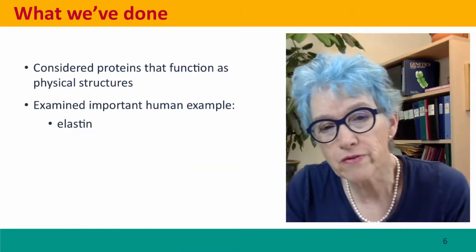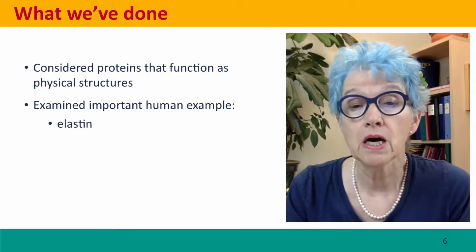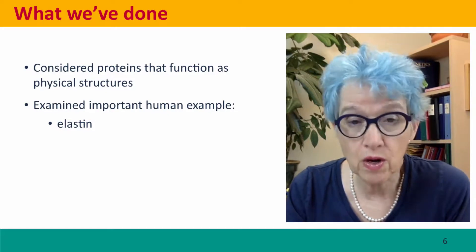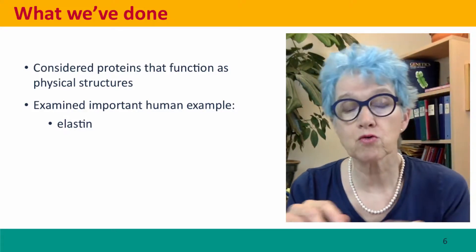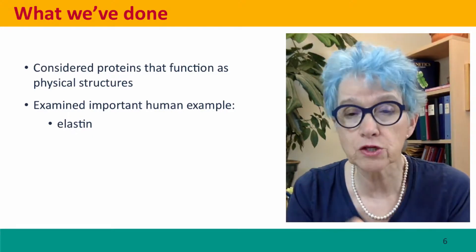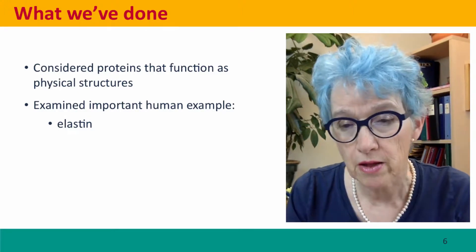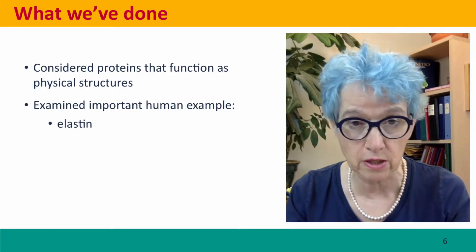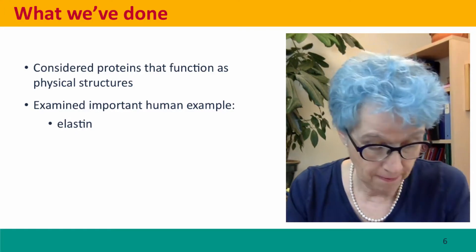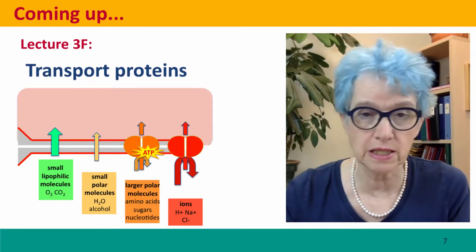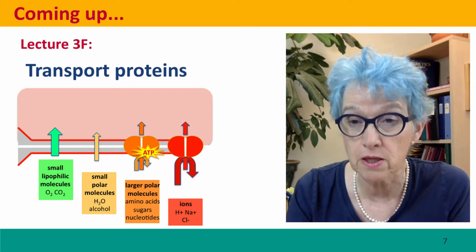So we've considered proteins that function as physical structures, and examined one important human example — elastin — where you can see how the tangle of the backbone of the monomer and the cross-linking of individual elastin monomers into a large elastin network creates a stretchy structure that can extend when under tension and relax back into a compact structure when the tension is released. Coming up next, we're going to think about transport proteins — proteins that transport molecules across membranes and around our bodies. I hope to see you there.